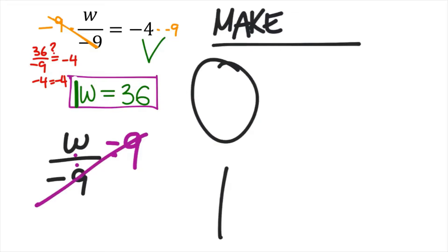It makes that a phantom one right there. So w divided by negative nine when I multiply it by negative nine, right, and this is going to fraction multiplication which we haven't gotten into, but I'm going to show it anyways because hopefully it will help. I have negative nine over one which I'm multiplying it by.